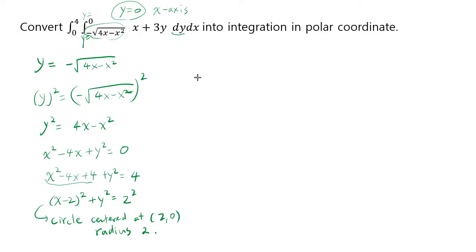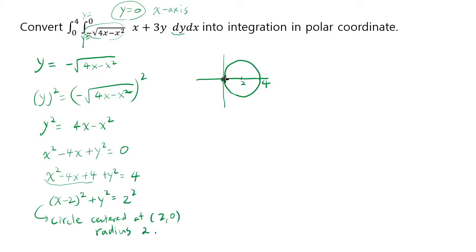So the graph is a circle of radius 2 centered at 2. It touches the origin and goes until x equals 4. We know it touches the origin because if you plug in 0, you get y equals 0, so it passes through (0, 0). That's the equation of the circle.